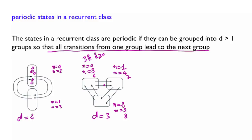Otherwise, the chain will be in one of the other two groups. So here again, you do not have convergence of the steady states. If you are told you started in one of these states, then whenever the time is of the form 3k+1, you will be in the second group, and the probability of being elsewhere will be 0. Now, given a Markov chain, how can we tell whether it is periodic or not? There are systematic mathematical ways of doing this, but usually within the types of examples in this class, we can just eyeball the chain and tell whether it is periodic or not.